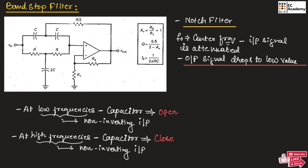So, we will get low frequencies and we will get high frequencies. The frequency between low frequency and high frequency will be attenuated at this center frequency. This filter will pass low frequency and high frequency, and the intermediate frequency will be attenuated.